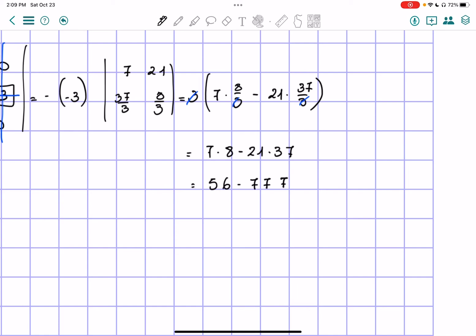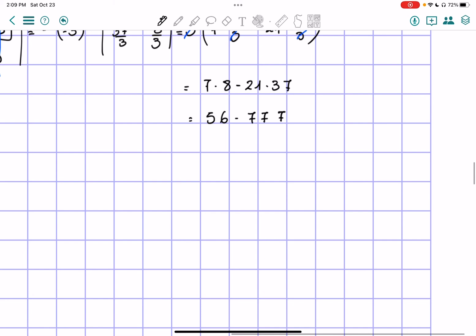minus the 50, sorry, plus the 56. It equals negative 721 and that is our determinant.